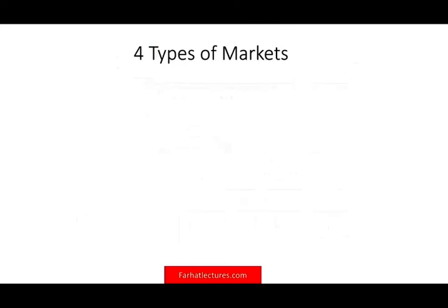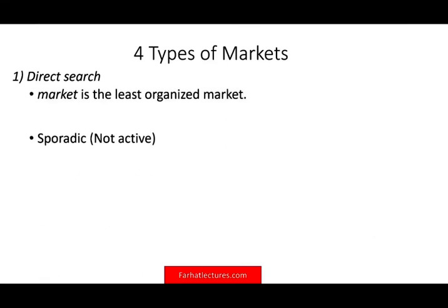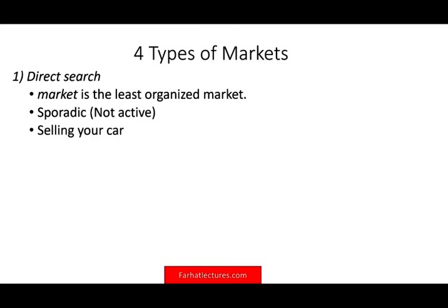The first thing we're going to look at is the four types of markets. The first is direct search — the least organized type of market. It's not active; it's sporadic. A direct search is basically like selling your car by looking for a specific buyer yourself — dealing with friends or family. There's no formal market; you are doing this yourself.